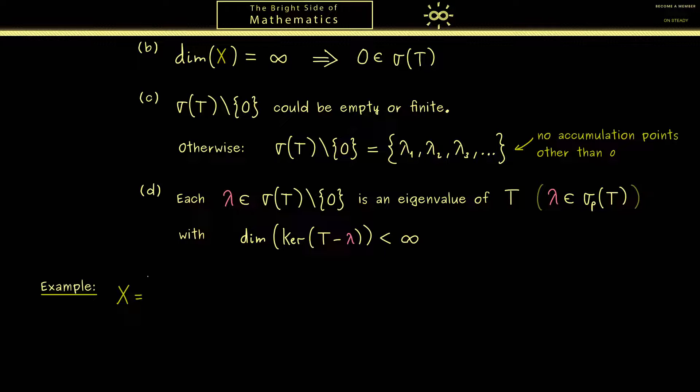A good example would be when we take the L^2 space as our Banach space. This is a Hilbert space, and we will work with these in the next video. However, first here, we look at an example of a compact operator T. And indeed, it's not so complicated to find one. We just define Tx to be the sequence 1 over j times x_j. Now of course, this is a well-defined linear and bounded operator, but also compact.